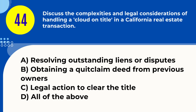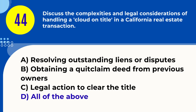Question 44. Discuss the complexities and legal considerations of handling a cloud on title in a California real estate transaction. A. Resolving outstanding liens or disputes B. Obtaining a quitclaim deed from previous owners C. Legal action to clear the title D. All of the above. Answer: D. All of the above. Explanation: Addressing a cloud on title can involve resolving liens, obtaining quitclaim deeds, and legal action to clear the title.